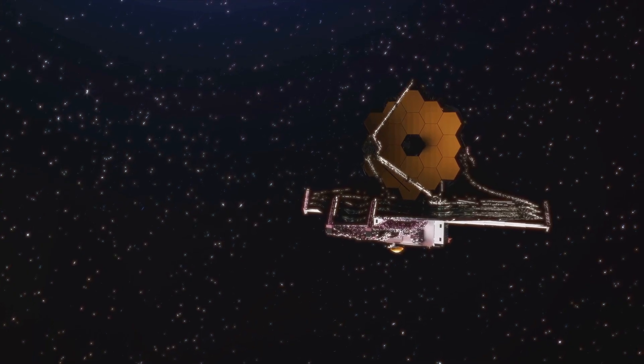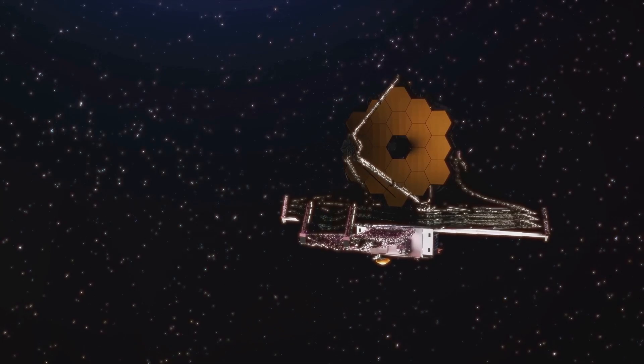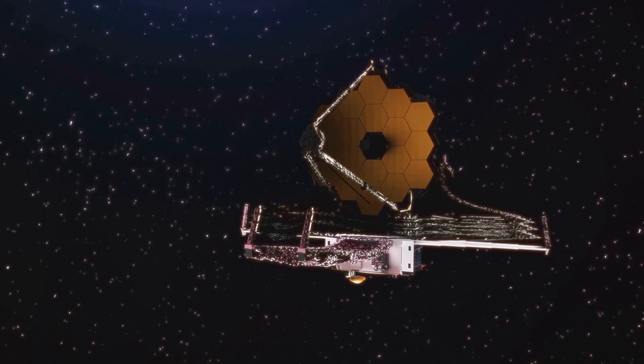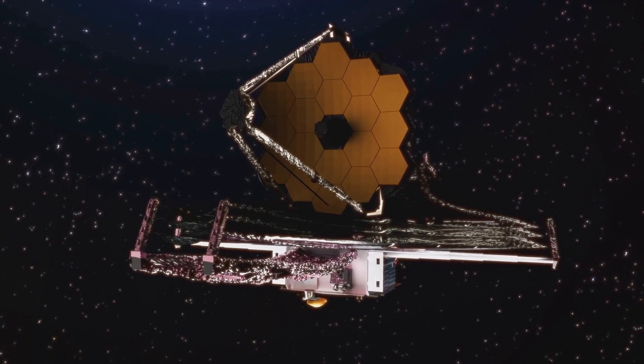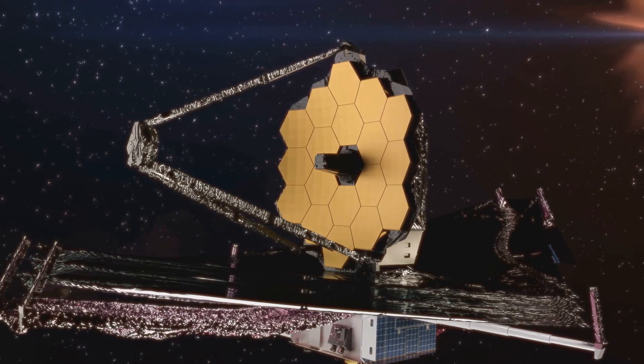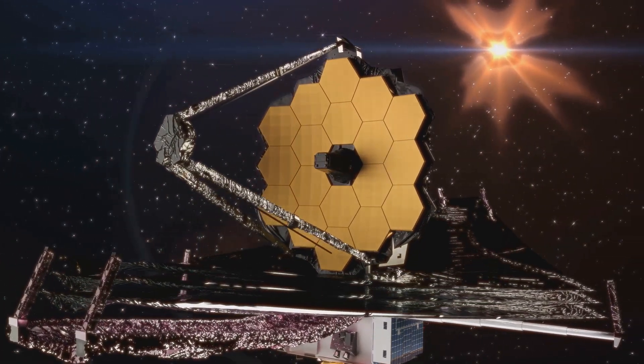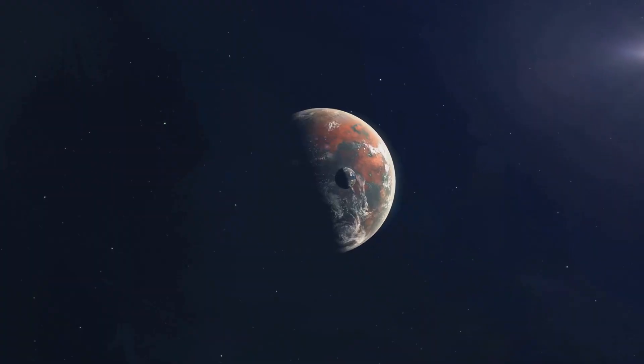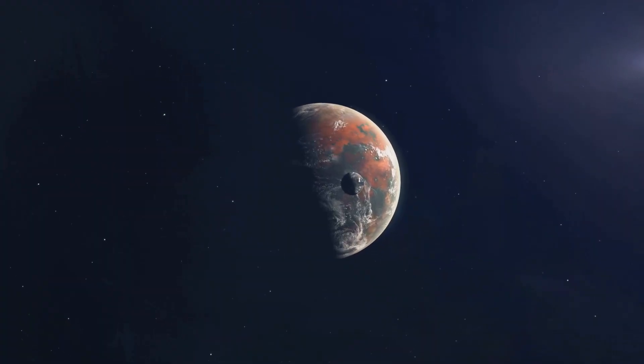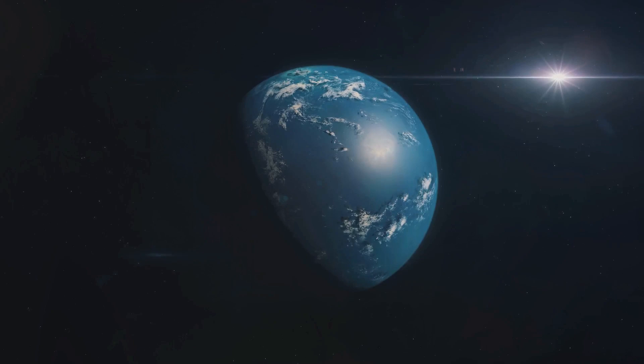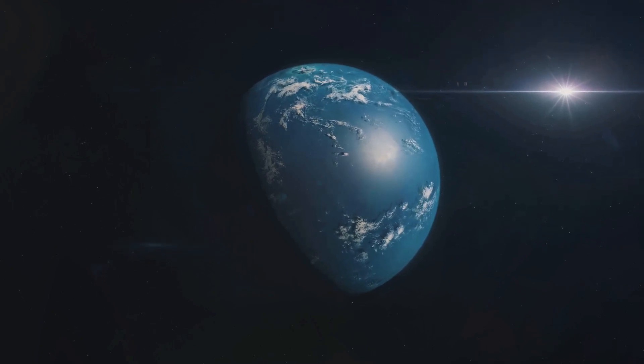This remarkable exoplanet lies about 41 light years away from us. To give you a sense of just how far that is, if we were to travel at the speed of light, it would take us 41 years to get there. But thanks to the James Webb Space Telescope, we can observe and study this distant world from the comfort of our own planet. What makes LHS 475 b so special is its size. It's similar to Earth.